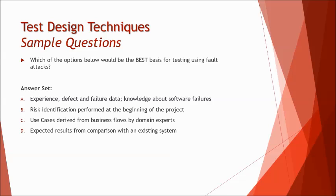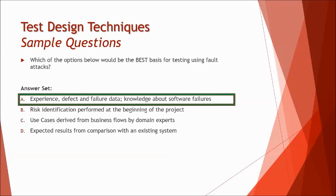Option A: experience defect and failure data, knowledge about software failures. Yes, it is one of the best basis for executing fault attacks. B says risk identification performed at the beginning of the project. That helps you to do test planning and other things. C, use cases derived from business flows by domain experts. As it is an informal technique, use cases invite a formal approach. Use case testing is one of the black box testing techniques and fault attack comes under experience-based technique. D, the expected results from comparison with an existing system. So finally, we have got one option here. That's A, which requires information like previous experience, defect data, failure data, and knowledge about common software failures to conduct fault attacks.